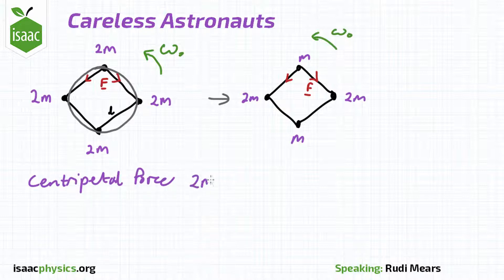This is greater than the force required to keep the careless astronauts moving in the same circle at the same angular speed. So something has to change, but because the system has some symmetry, even after the tools have been dropped, we have to preserve this in the final state.